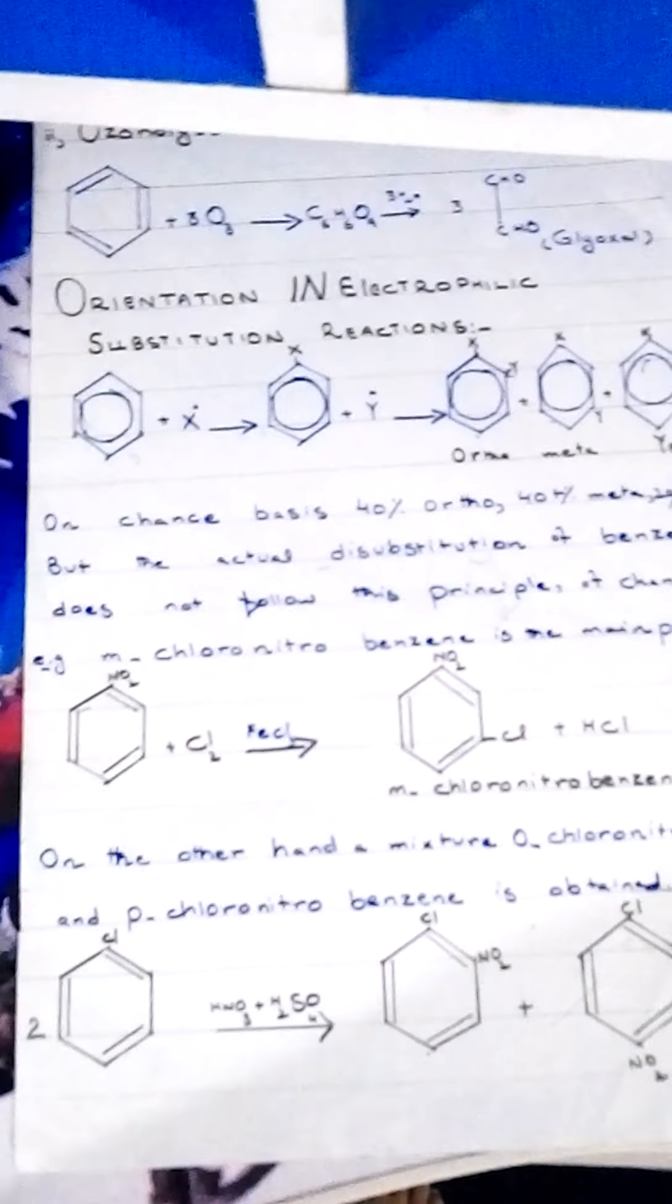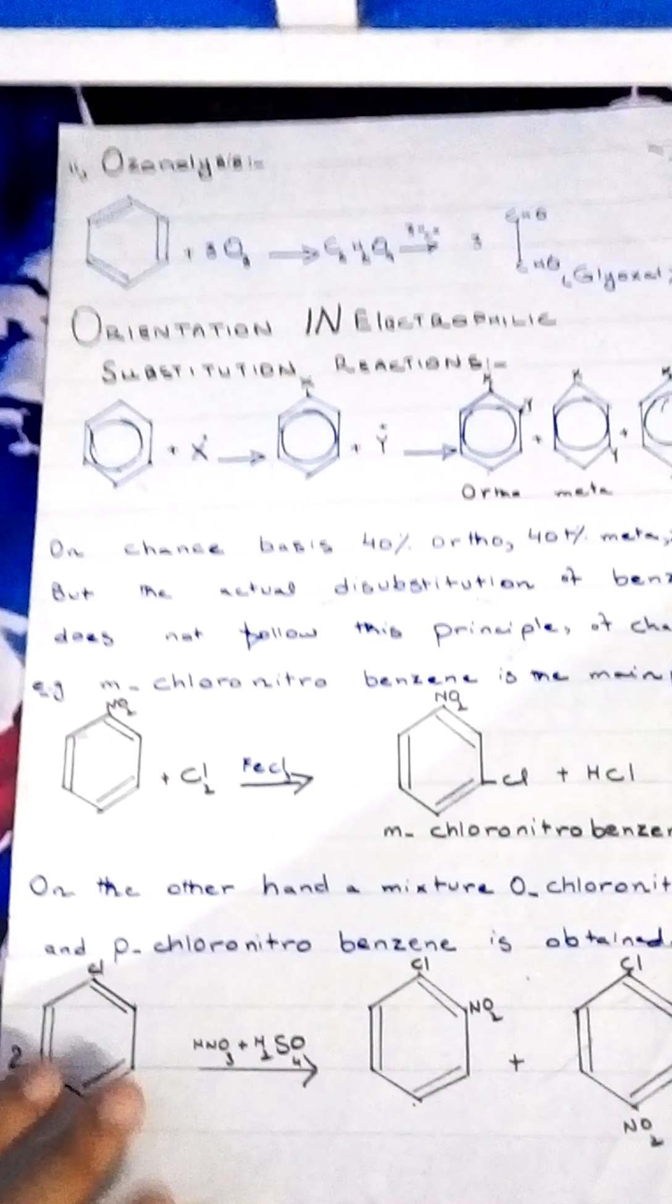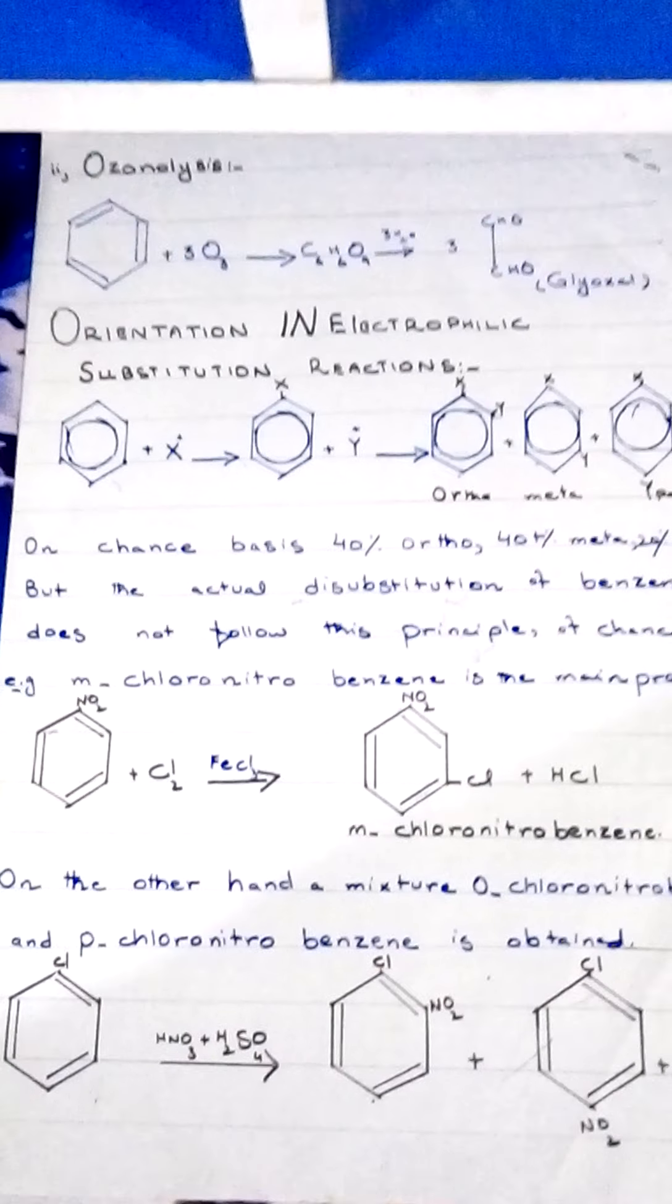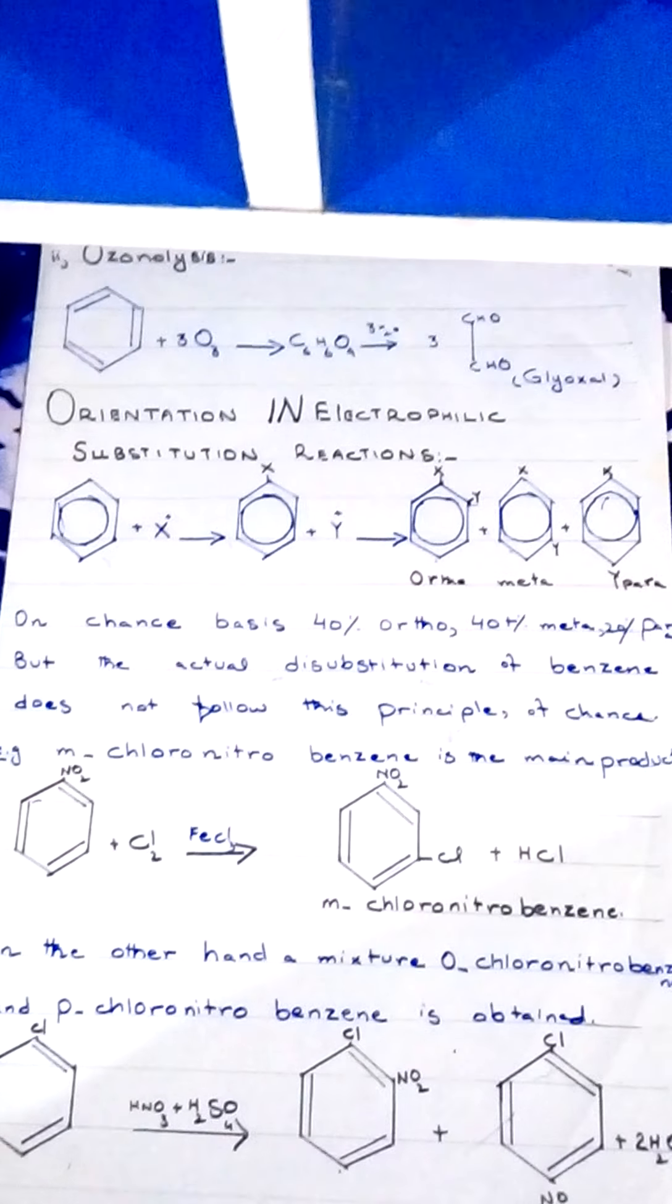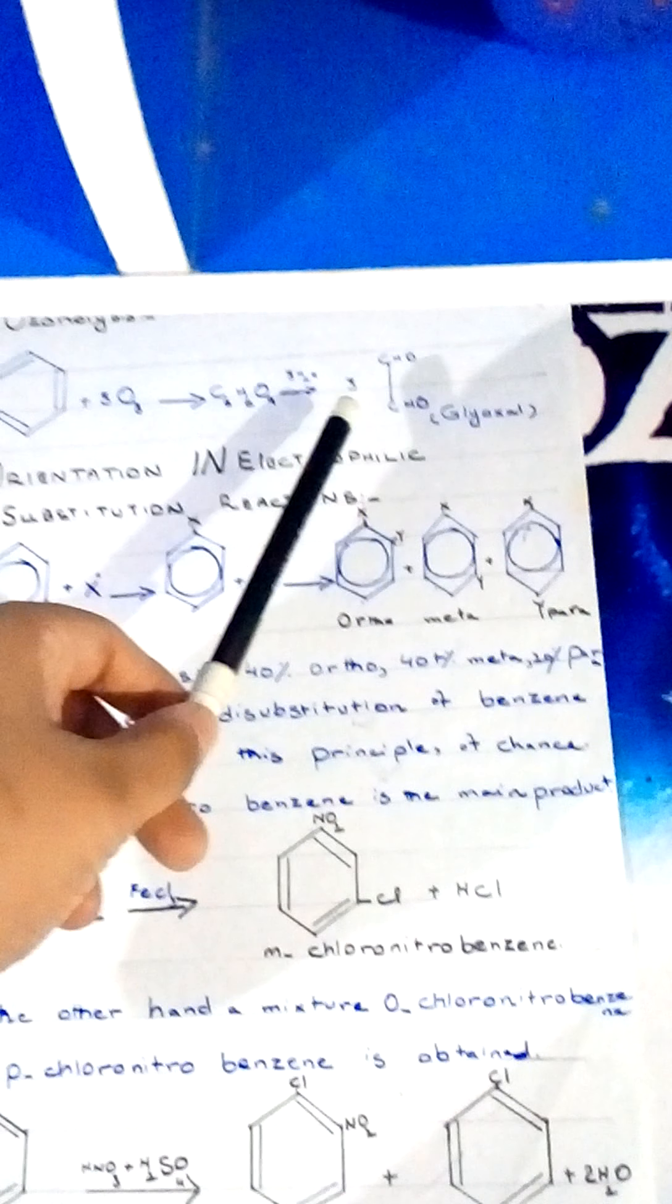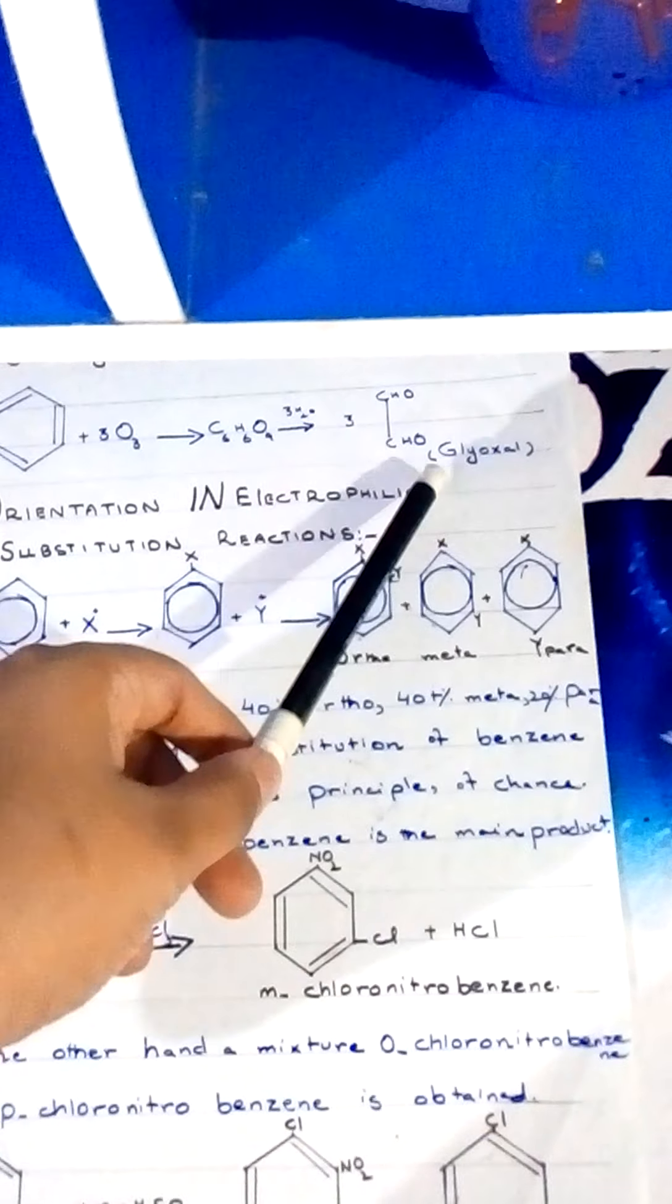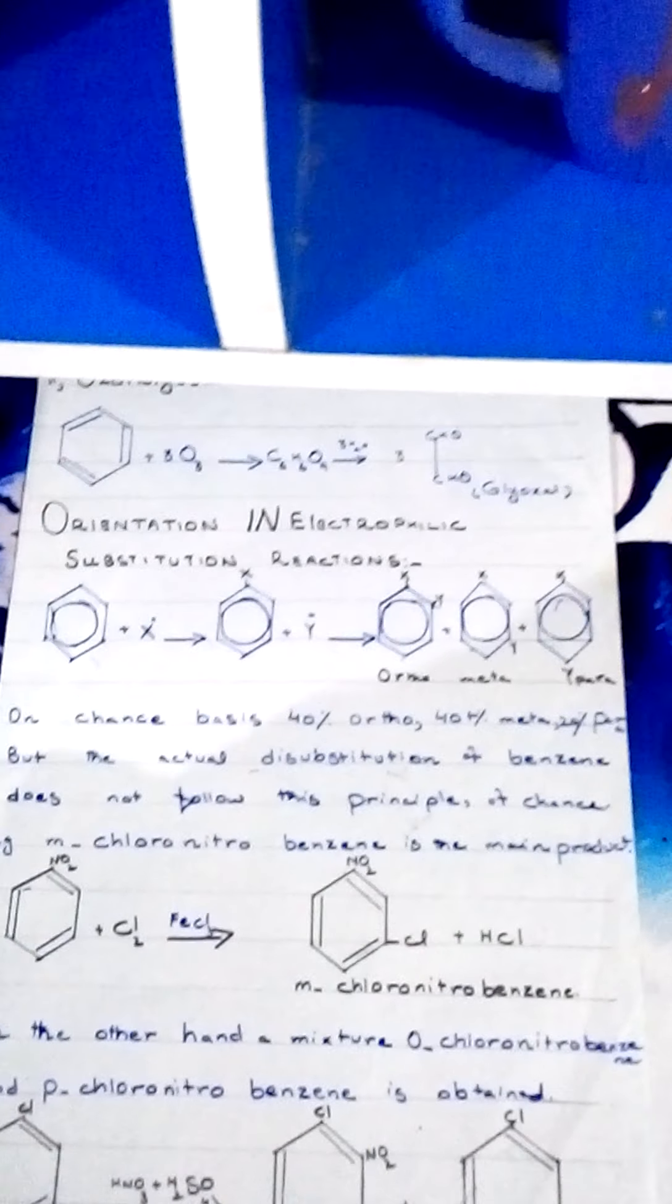Next is ozonolysis. What is ozonolysis? Ozone, formula O3, when reacted with benzene, the molecule breaks down. This is called ozonolysis. O3 gives C6H6O9 intermediate compound, which is converted into glyoxal. Glyoxal: CHO, CHO. The two aldehyde groups are attached here. This is called glyoxal.